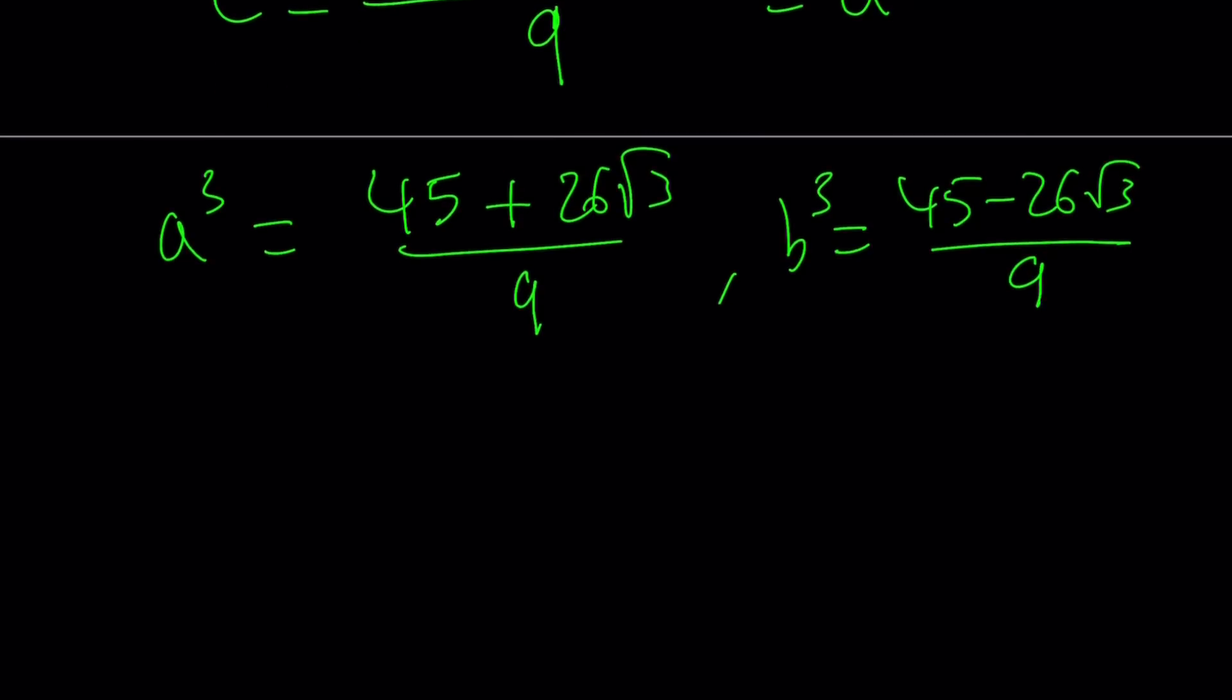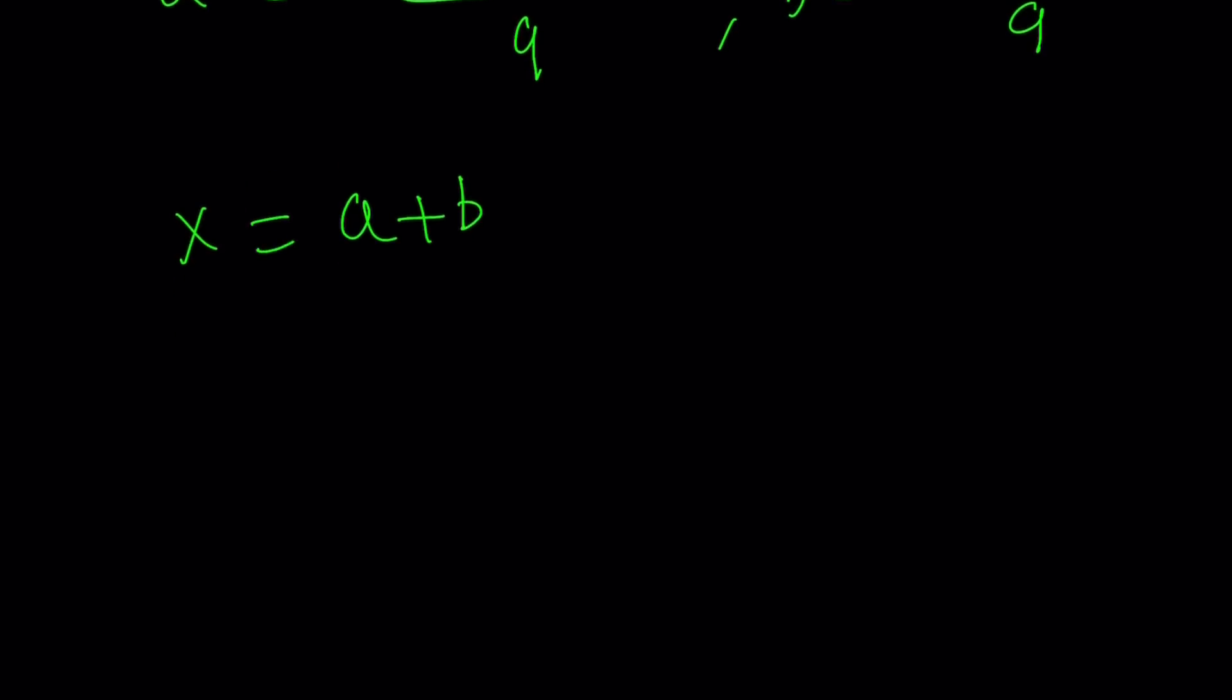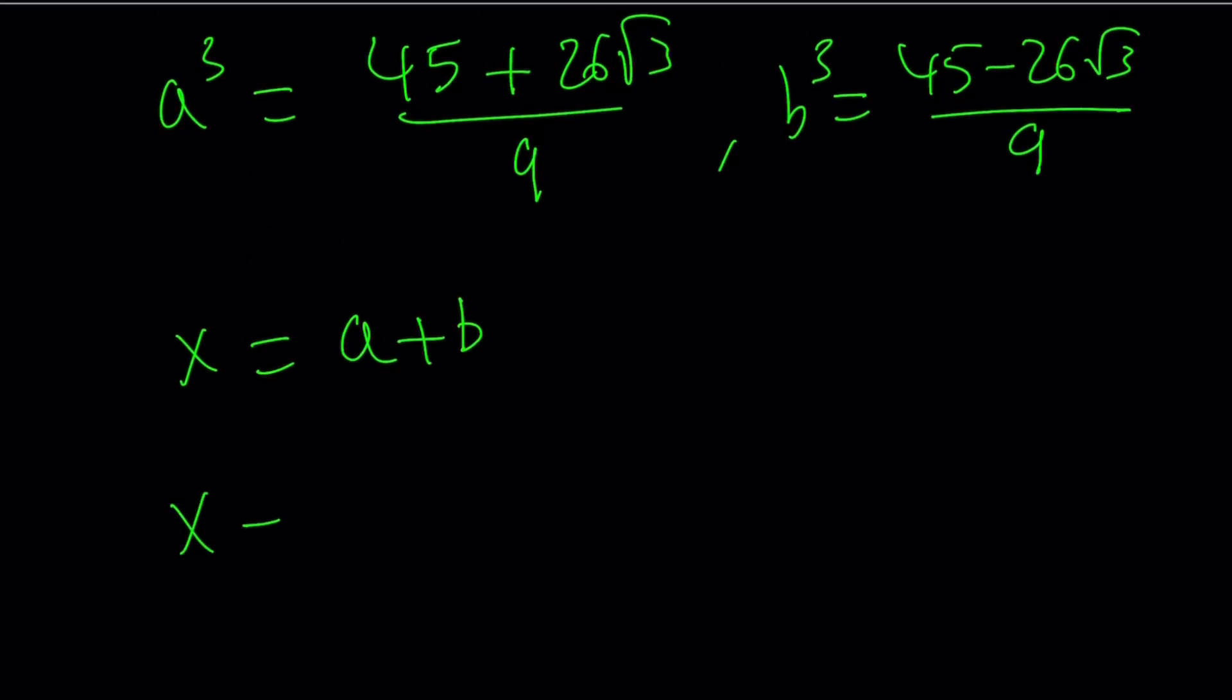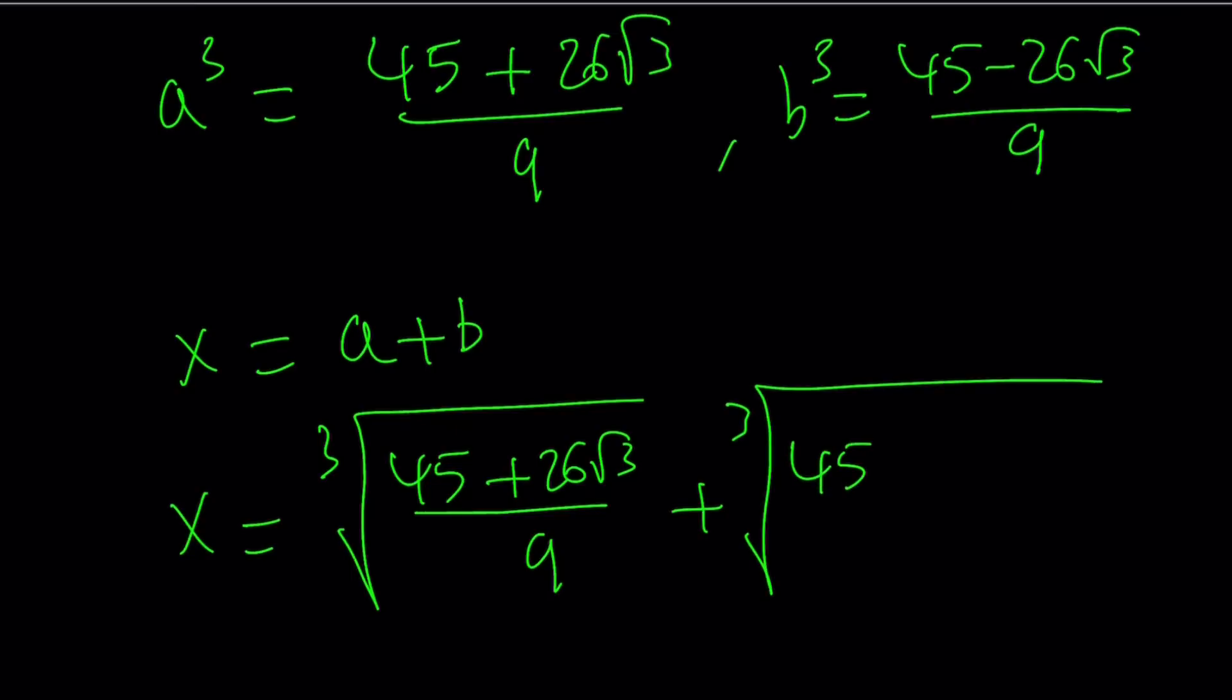From here, we can take cube roots and find the values of a and b. And remember, x is equal to a + b in the cubic formula. So x becomes the cube root of (45 + 26√3)/9 plus the cube root of (45 - 26√3)/9.